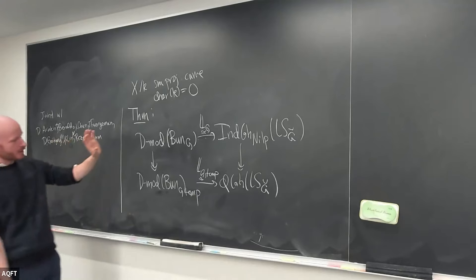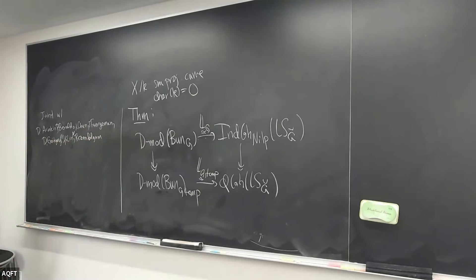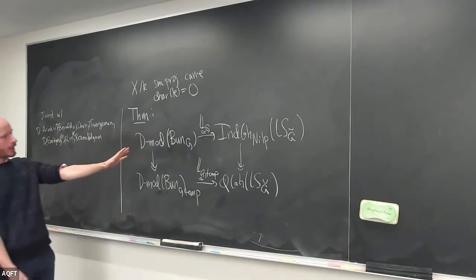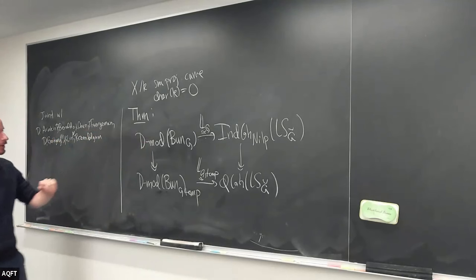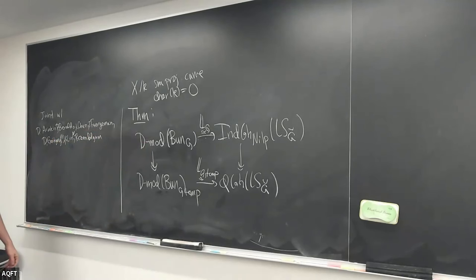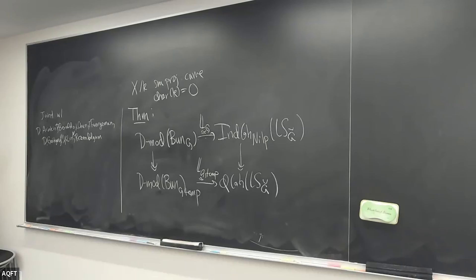There are various properties that this equivalence satisfies. So there's some kind of compatibility with Hecke functors — I'll say more about that later. Various objects are supposed to match under this equivalence. In fact, it's over-determined from those kinds of considerations, and we'll kind of see that. And there's a question about how it is compatible with the t-structure.